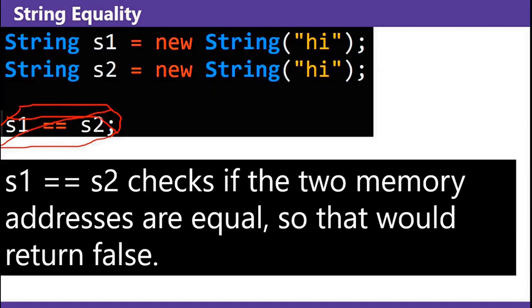Finally, string equality. String s1 equals new String hi, String s2 equals new String hi. Big no-no on s1 equals equals s2. s1 equals equals s2 checks if the two memory addresses are equal, so that would return false.